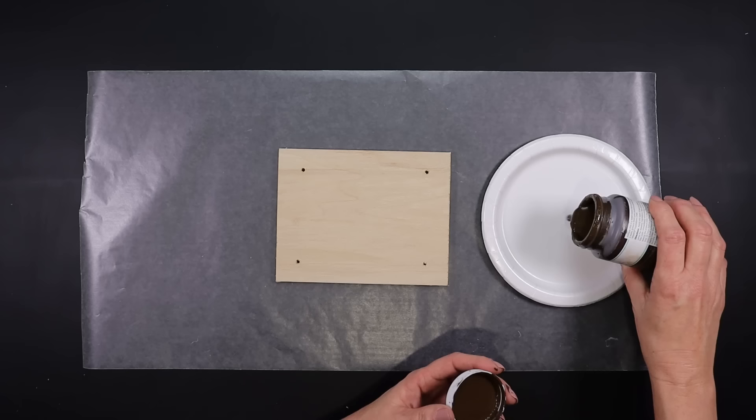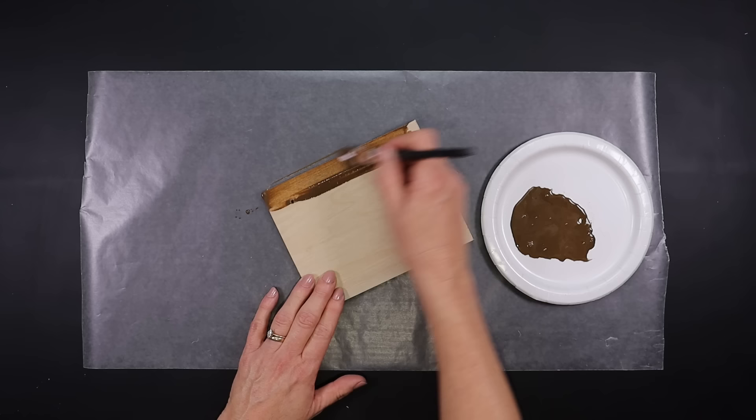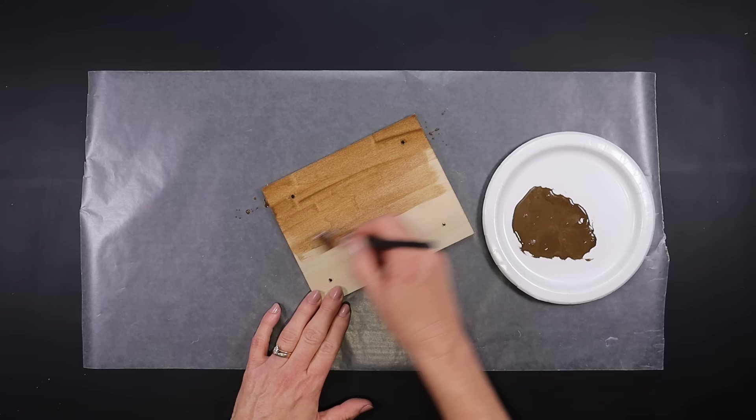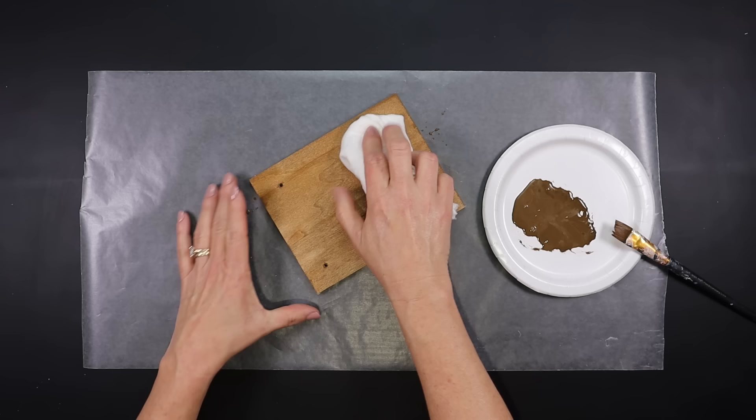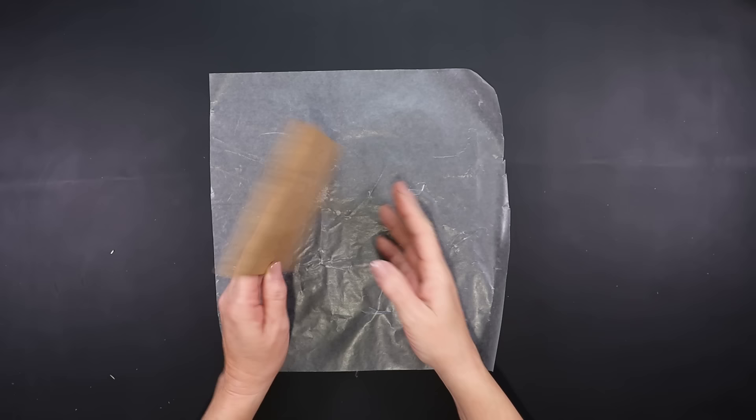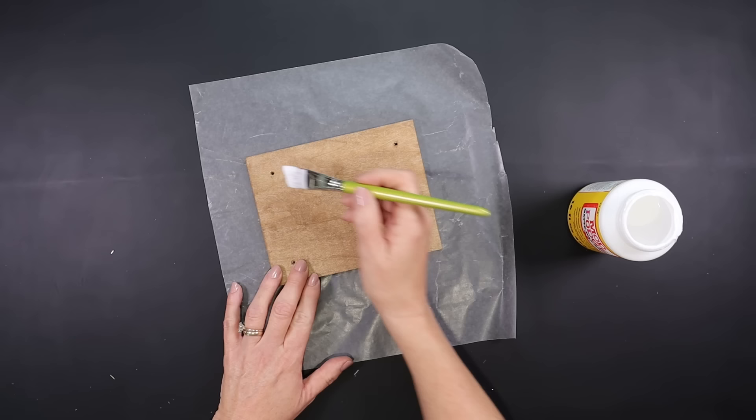I took some antique wax and watered it down just a little bit to create a nice stain. I'm going to go over this entire piece including the outside edges, and then I'm going to take a lint-free cloth and wipe it down. It's going to blend it in and remove any of the excess. You'll want to let that thoroughly dry, then we're going to take some Mod Podge and apply a thin layer just over the top of the board and let that dry as well.